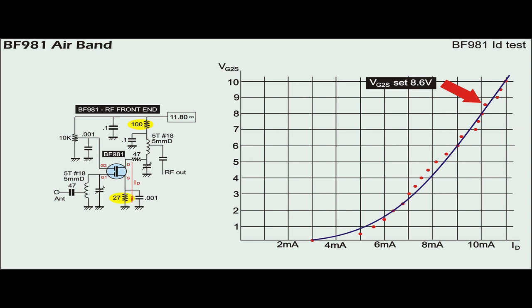From this actual test, it was found that VG2S of 8.6 V yields drain current of 10 mA, so the 10K potentiometer was set accordingly.